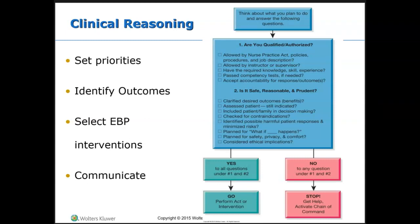There are also some questions you can ask yourself as you go through outcome identification and planning. First, you have to figure out which problems require your immediate attention — that's where prioritization comes in — and which ones you should defer to another team member. Knowing what's within your scope, as well as the scopes of all the other team members you're working with, is essential so you know which interventions are your responsibility and which go to other providers like PT.